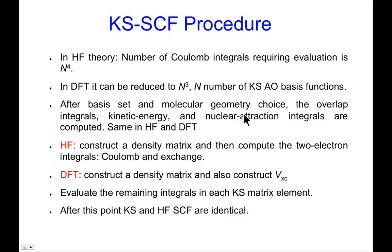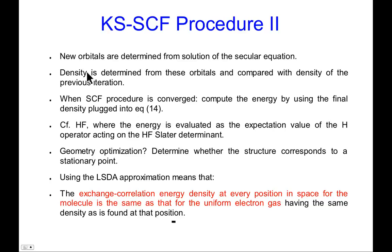Once you've chosen a basis set and molecular geometry, things proceed much like in Hartree-Fock: compute overlap integrals, kinetic energy integrals, and nuclear attraction integrals. In Hartree-Fock you then construct a density matrix and compute two-electron integrals; in DFT you construct a density matrix and also construct the exchange-correlation potential, adding those integrals into the Kohn-Sham matrix elements. After this point the procedures are essentially identical: cycle until orbitals are converged, get density from those orbitals, and compare with the previous iteration.